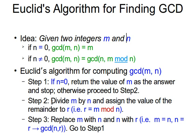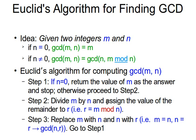Step 2: divide m by n and assign the remainder to r — i.e., r = m mod n, or using the percentage symbol in Java or other programming languages, r = m % n.